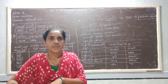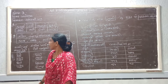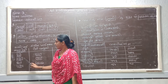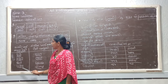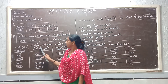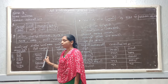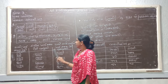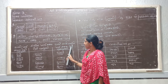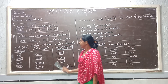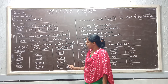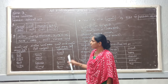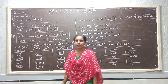કાચી અને રાંધીને ખાય સકાય તેવી વસ્તુ વિશે આપણે સમજ મેળવીએ. કાચી ખવાય તેવી વસ્તુઓ: કેરી, મૂળા, ગાજર વગેરે. એના પછી રાંધીને ખાય સકાય તેવી વસ્તુઓ: દાળ, ભાત, બટાકા, રીંગણ.